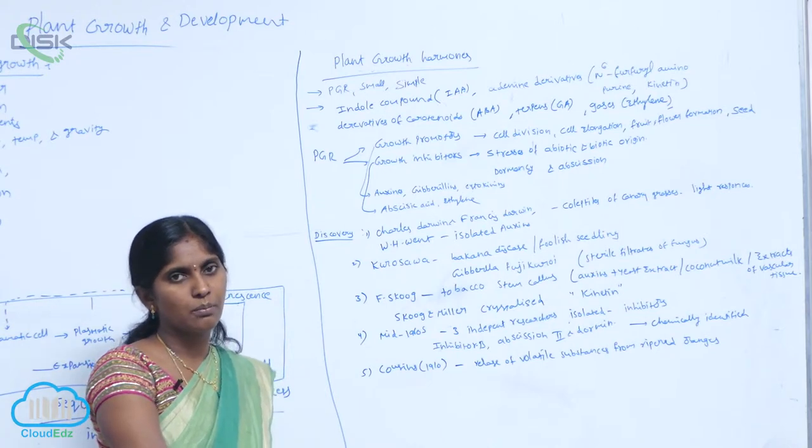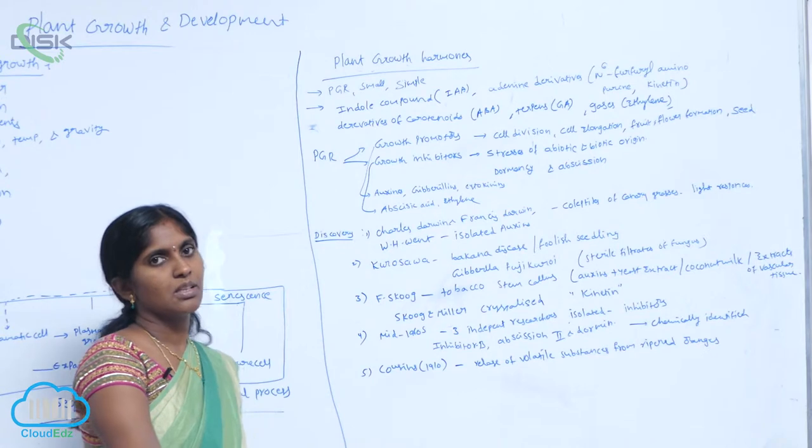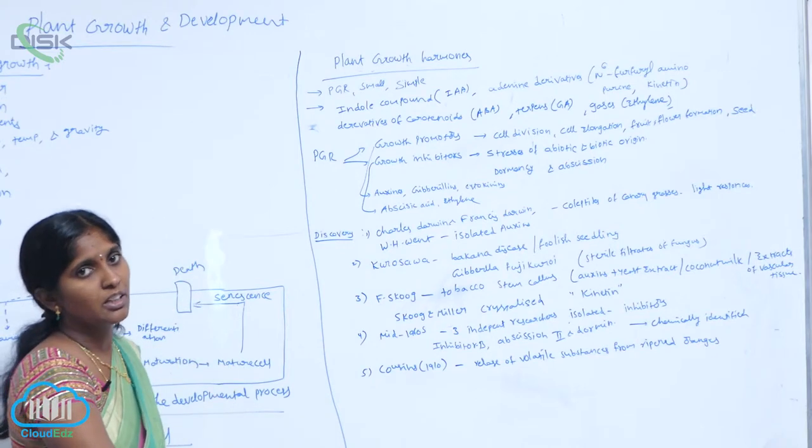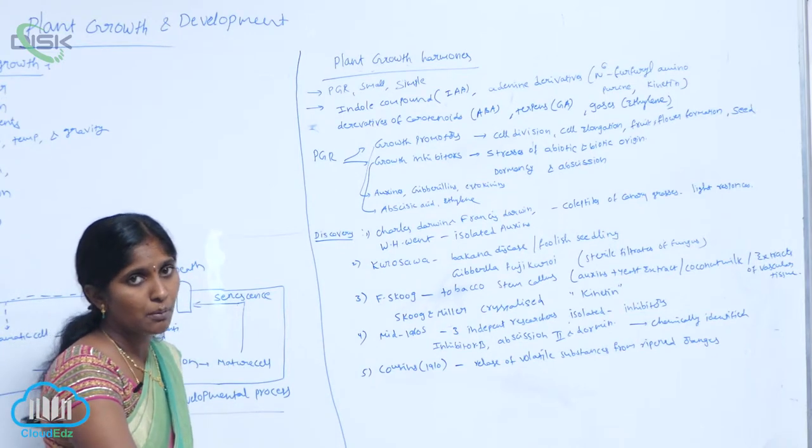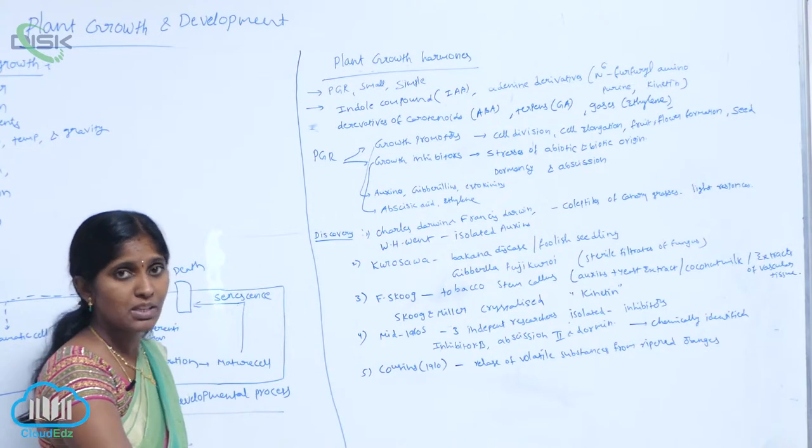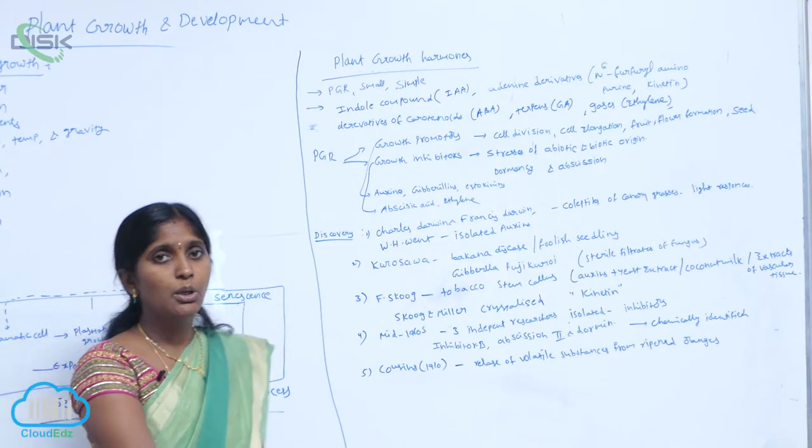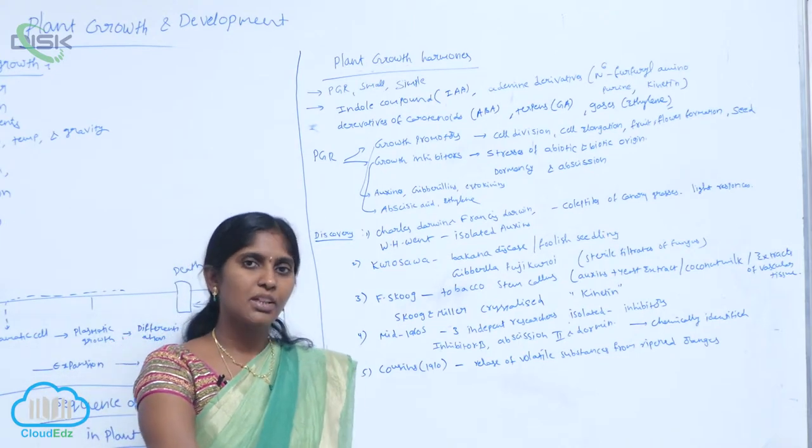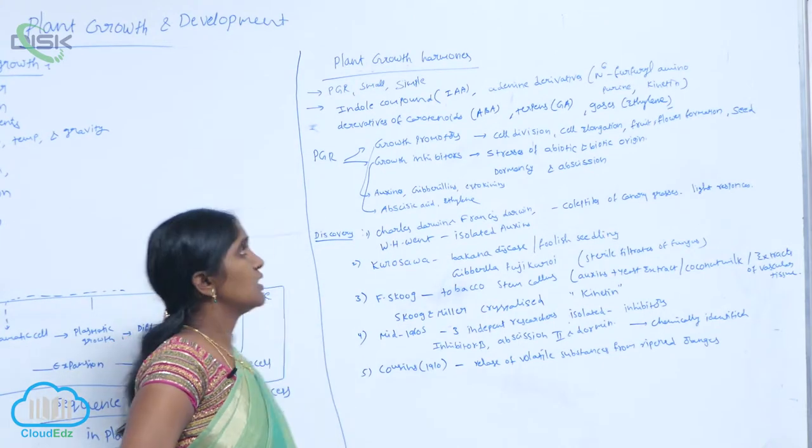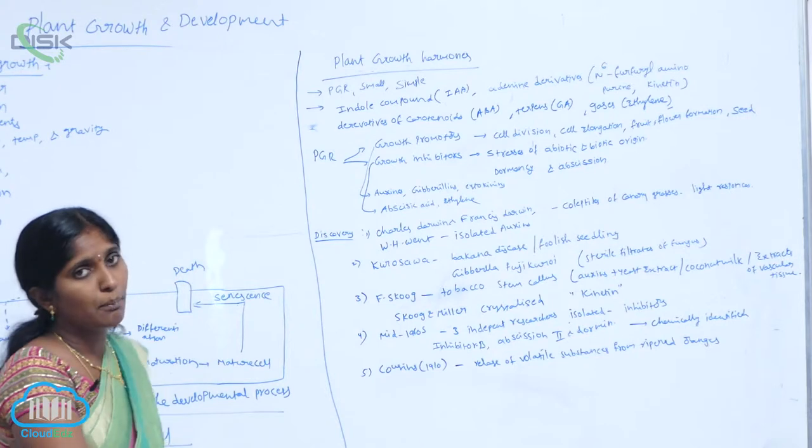What is the source to form phytochemicals? The phytochemicals are derivatives of different precursor compounds. IAA, indole acetic acid, that is auxin, is the derivative of indole compound.